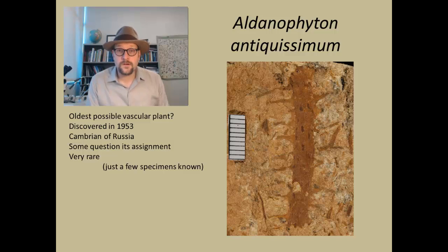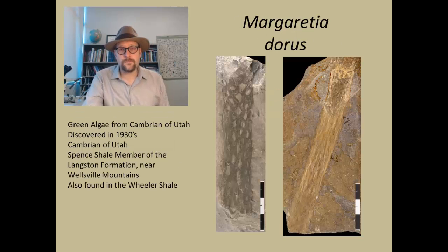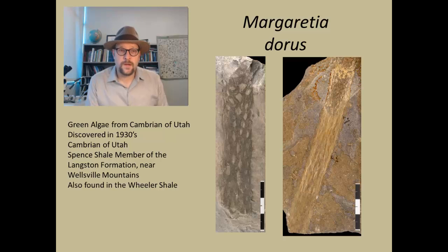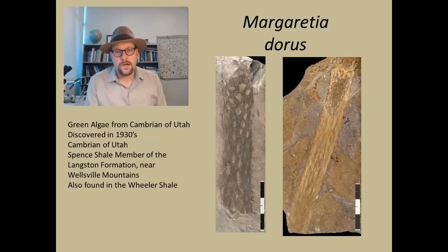So it is a very contentious fossil whether it is a vascular plant or not. It closely resembles another fossil known here in Utah, in North America, and that is Margarita Doris, which is found in the Spencer Shale member of the Langston Formation, and also in the Wheeler Shale, which are all Cambrian units.